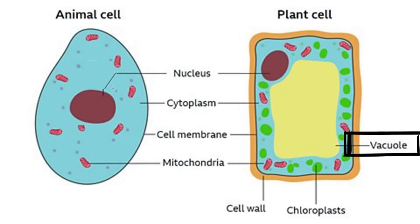Vacuoles are fluid-filled sacs surrounded by a membrane, used to store substances that can then be used by the cell. Animal cells usually have several small vacuoles or none at all, while plant cells usually have one or two large vacuoles which store substances such as sugars, salts, and water. Vacuoles in plant cells are permanent, while vacuoles in animal cells are temporary or absent.